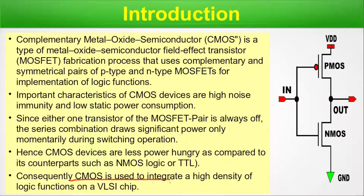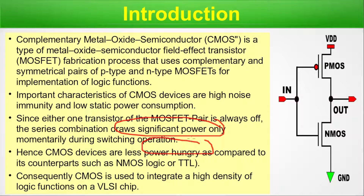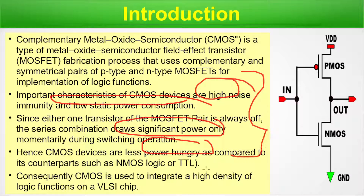Consequently, CMOS is used to integrate a high density of logic functions on a VLSI chip because of its low power consumption, noise immunity, and low static power consumption. All these things make it an essential candidate to be integrated in high-density logic functions in a VLSI chip.